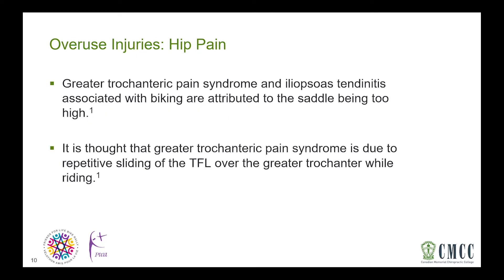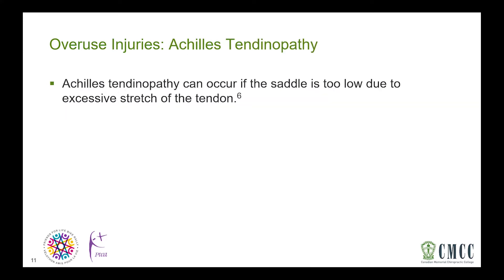Both iliopsoas tendonitis and greater trochanteric pain syndrome can be caused by having the saddle too high. If the saddle is too high, there is more stretch in the IT band which connects to the TFL at the side of your hip, and this can lead to repetitive sliding of this muscle over the greater trochanter while riding. Lastly, having the saddle too low can lead to excessive stretch of the Achilles tendon, causing Achilles tendinopathy.